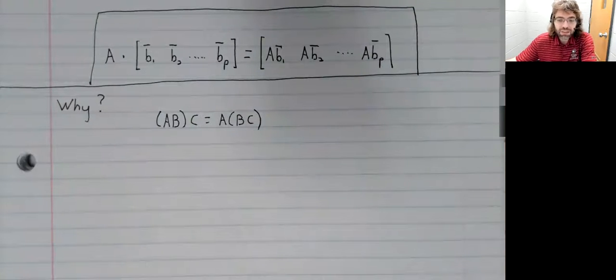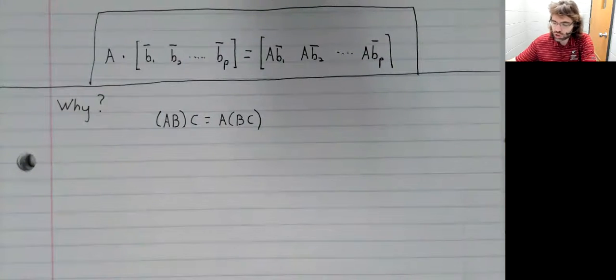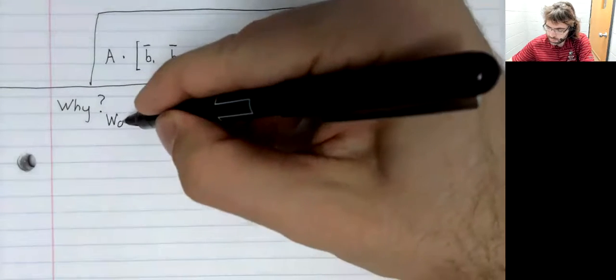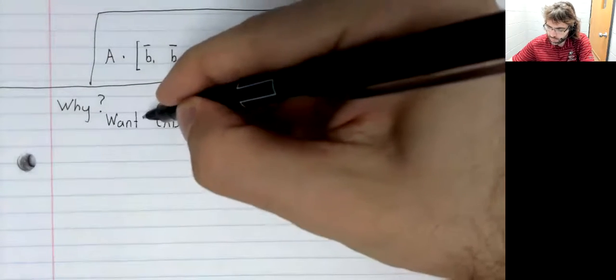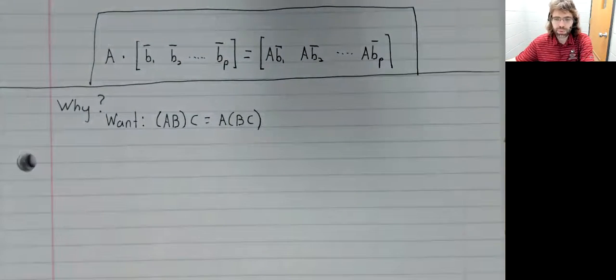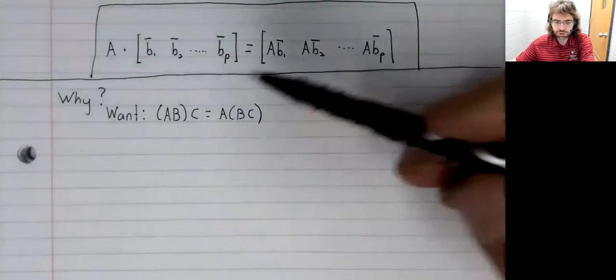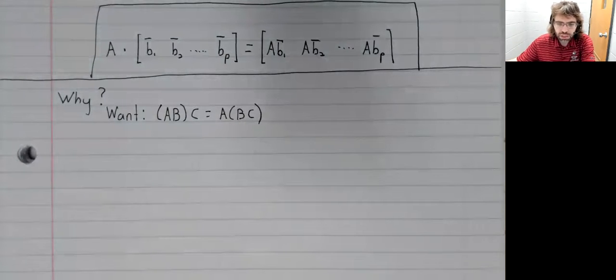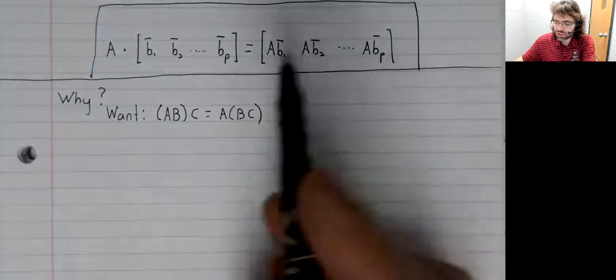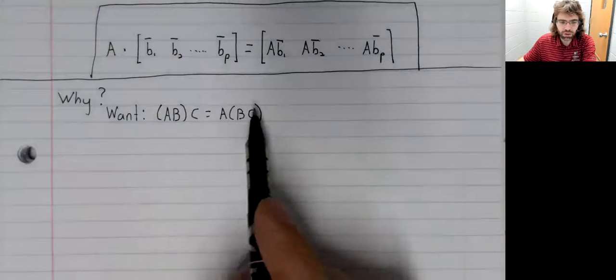If matrix multiplication is not associative, we basically just can't multiply three matrices together. That would be a huge problem. So we really want this to be true, and we want it to be true for all matrices whose dimensions match such that these products are defined.